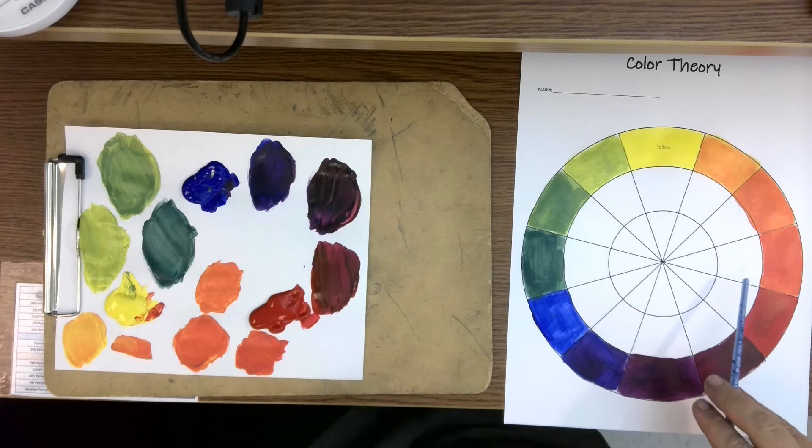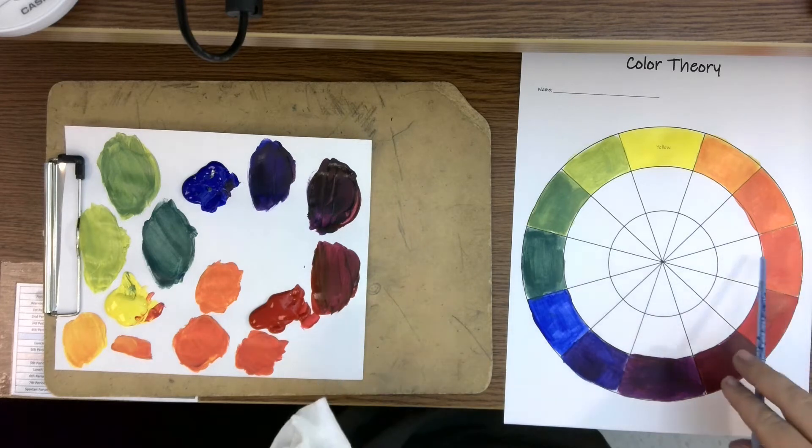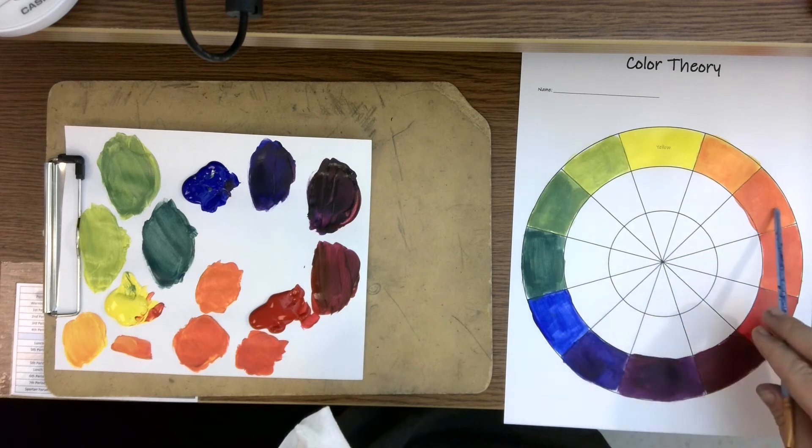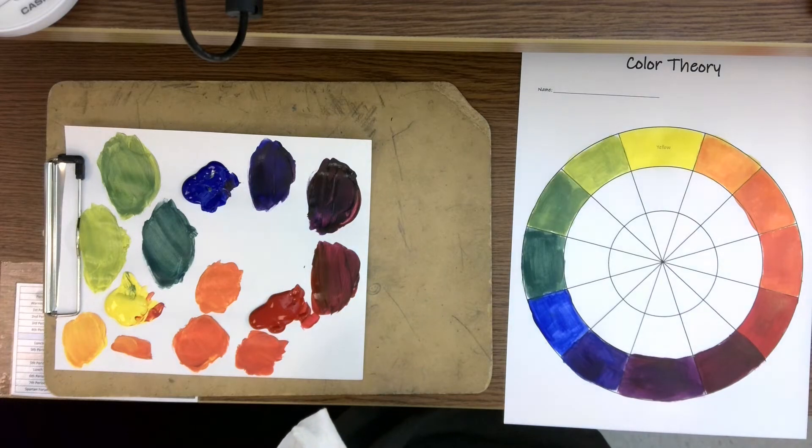You can also think of it as black and white. Black and white are opposite colors and black and white helps illustrate the concept of what complementary colors do when they are placed next to each other. They make each other look more bright.